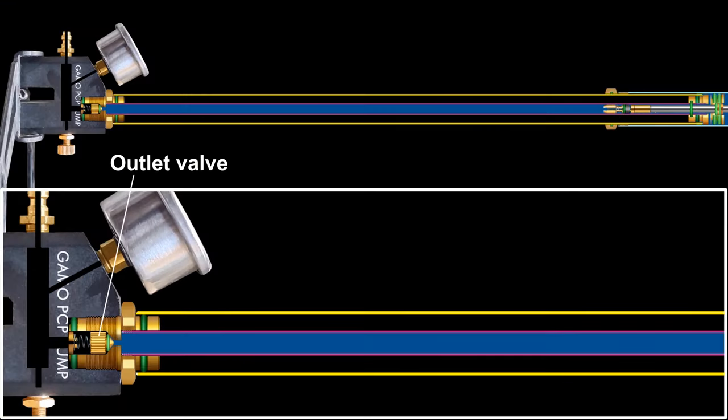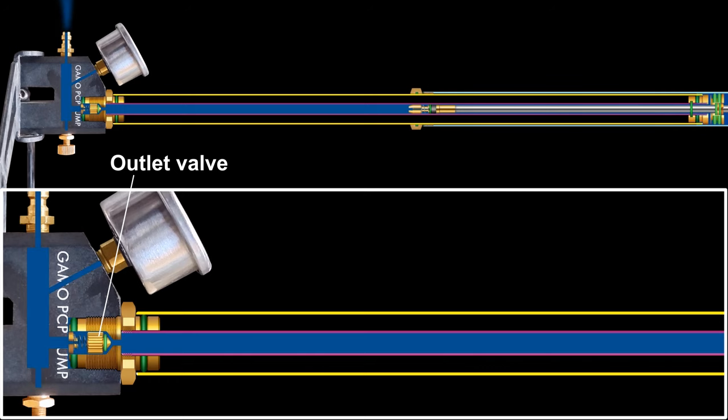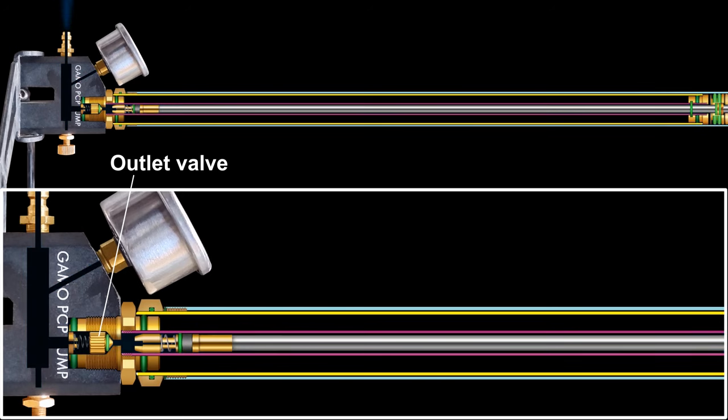The outlet valve is also called high pressure valve because when the pump is connected to the gun it holds high pressure in the base cavity.